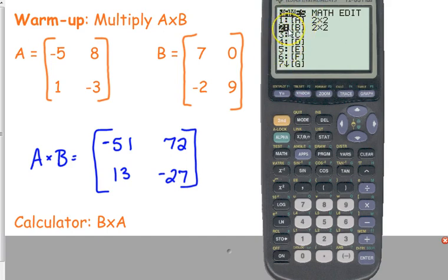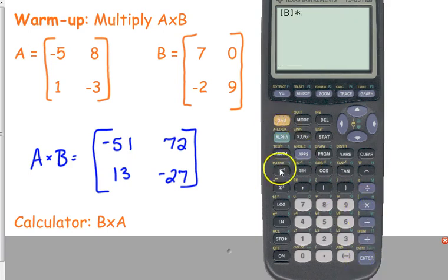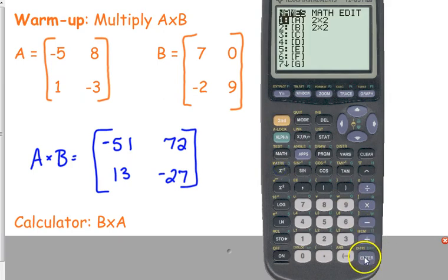and this is why it's very important what order you do it in. We just said that it's not the same as A times B, so we've got to make sure that we select matrix B first, then put our time symbol, go back to our matrix menu, select matrix A, so you should see B times A. You just press enter.